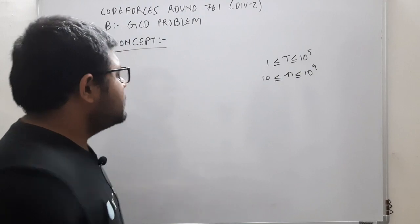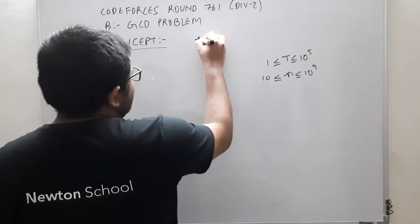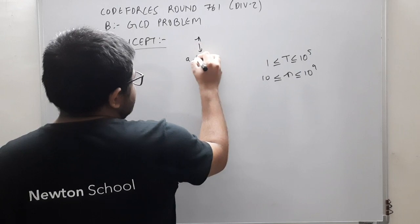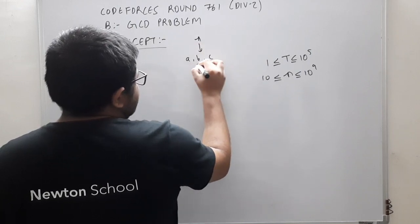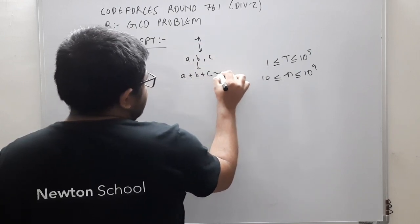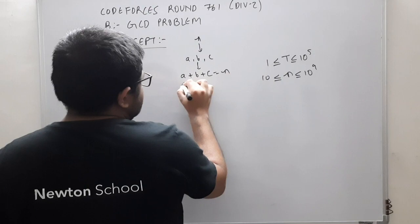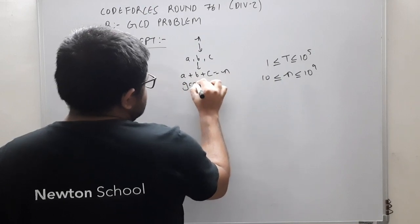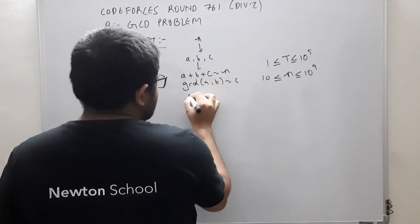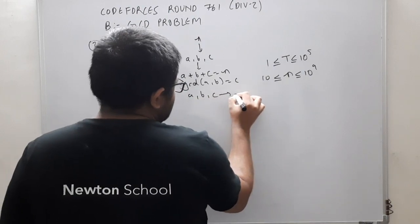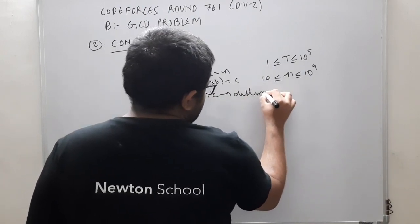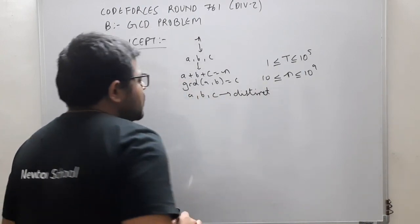Now talking about the concept — we are given n, which is a positive integer, and we need to find a, b, c such that a plus b plus c equals n, GCD of a and b equals c, and all three a, b, c must be distinct. That's all we need to find.